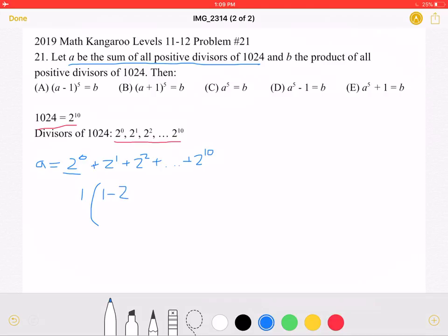to the power of the number of terms there are, there's 11 terms, over 1 minus the rate, which is 2. And this would simplify to this, which would then simplify to 2 to the 11th minus 1.